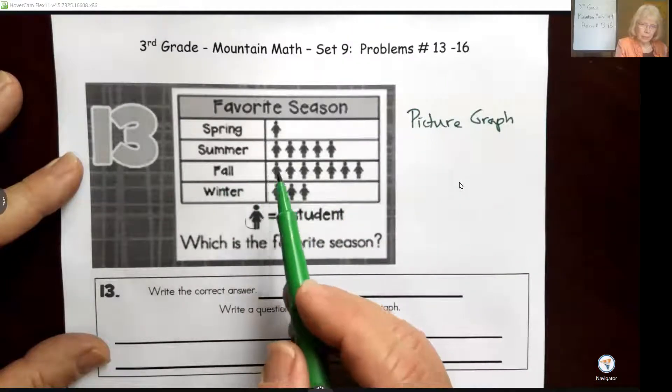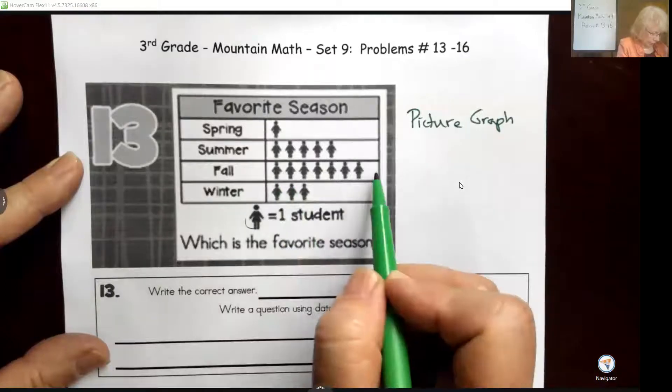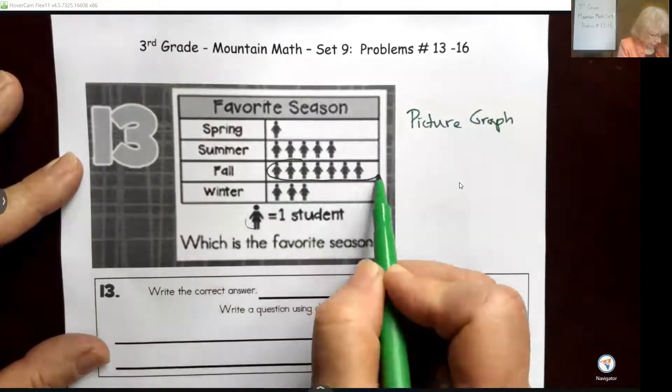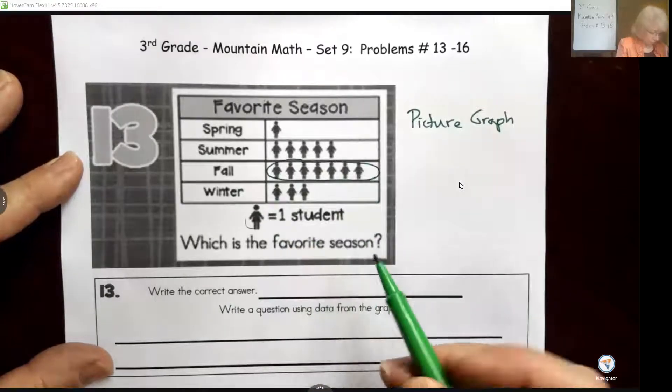We're going to look at which one more students voted for than any of the others. We look at who has the most students here, and it's clearly fall. They don't even ask us how many, so we're done. Our answer is fall.